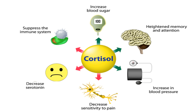Now the big factor here is cortisol. When we are under stress, our bodies secrete high cortisol levels from the adrenal glands. Those cortisol levels release sugars from the liver, causing a high influx of sugar. This starts causing a decrease in serotonin, an increase in blood pressure, and memory issues. The key thing is that these cortisol levels are suppressing and making the immune system weaker.